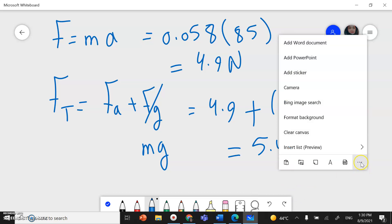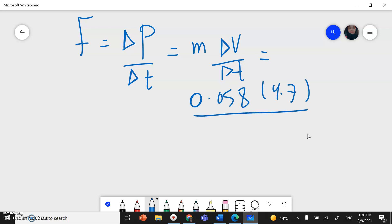Another way to do this question using the conservation of momentum. Force is change in momentum divided by change in time, which equals M change in velocity divided by change in time. Mass is 0.058, velocity is 4.7 minus 0 divided by 0.055. This gives you 4.9 Newtons. Then you find the total force, this value plus the gravitational force, which is mass times acceleration. You should get the same answer.